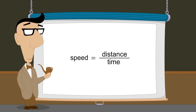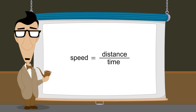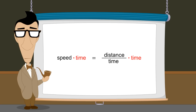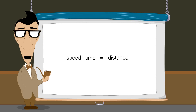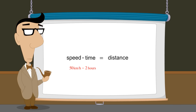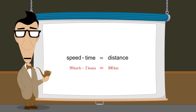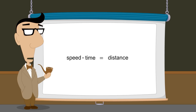Knowing this relationship between speed, distance, and time, we can calculate any of these three quantities if we know the values of the other two. For example, by multiplying both sides of this equation by time, we see that speed times time equals distance. For example, if we go 50 kilometers per hour for two hours, we will travel a distance of 100 kilometers. This formula is easy to remember and very useful for solving problems involving speed, time, and distance.